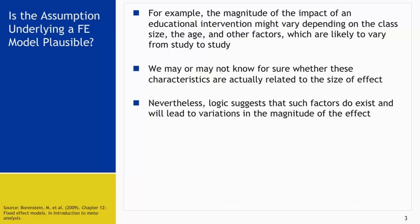For most of the time, logic suggests that such factors do exist and will lead to variations in the magnitude of effect. We're looking at the characteristics of the study — it could be design characteristics or the characteristics of the study participants or study setting. These characteristics may be related to the effect size, and we care about them because they may have an effect on the effect size we're going to see in those studies.